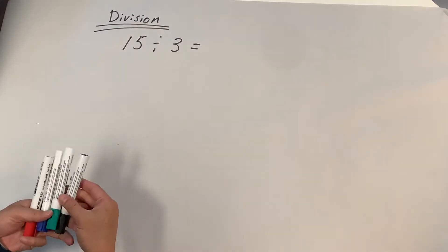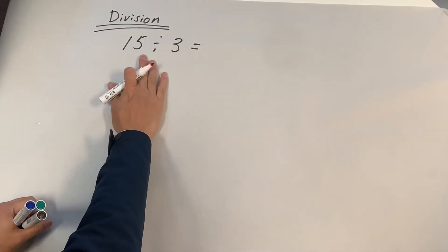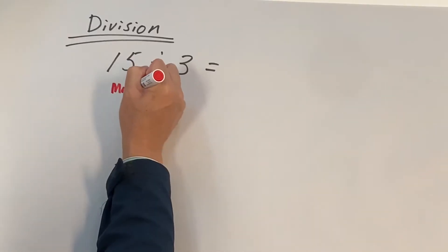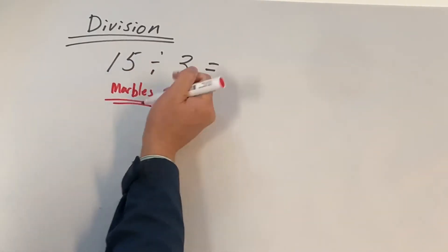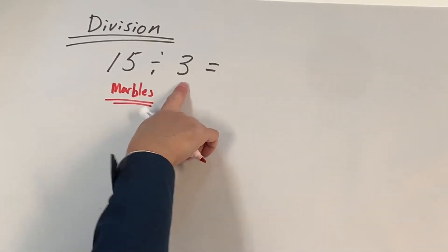15 divided by 3. So there are two meanings. Let's say we have 15 marbles and we're going to share 15 marbles by three people.